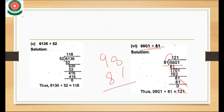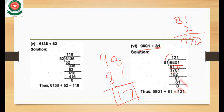170 — we multiply 81 times 2 which is 162. 162 is nearest to 170. Subtracting gives a remainder. Then 81 times 1 is 81. When you subtract, the answer comes to 0. The answer 121 comes.